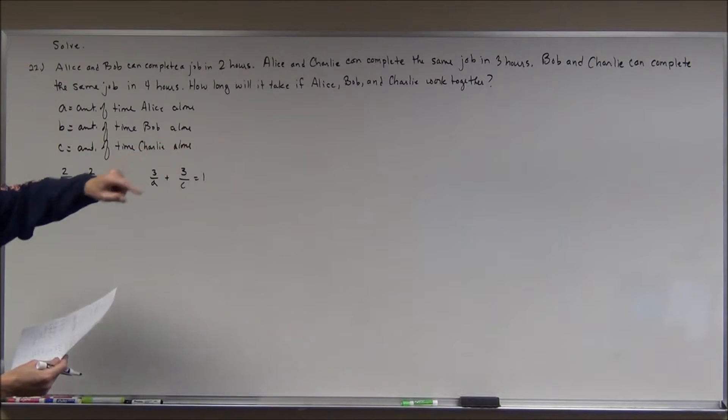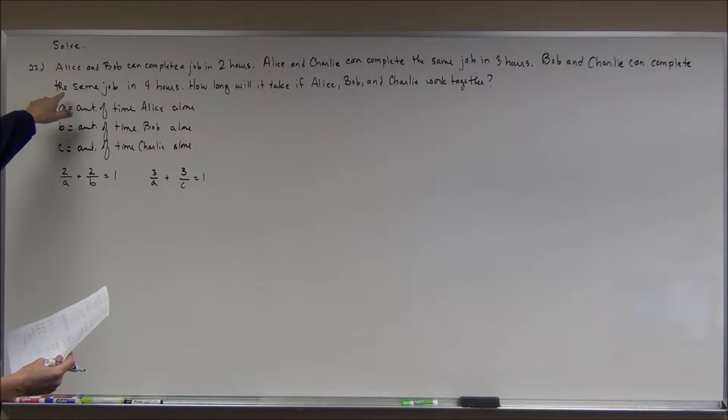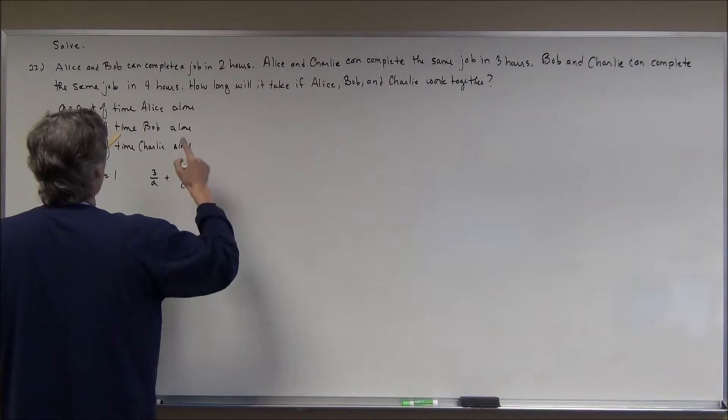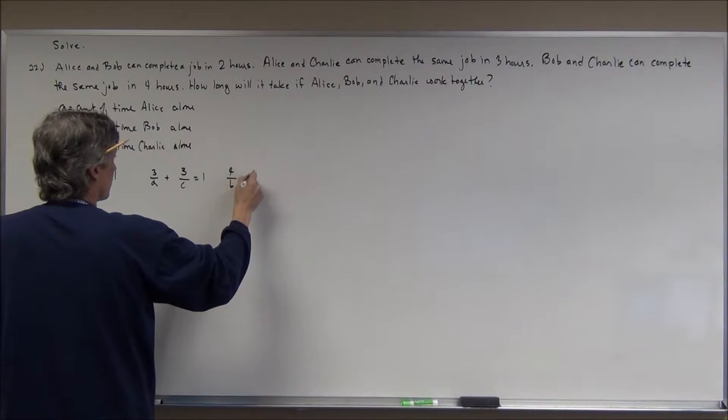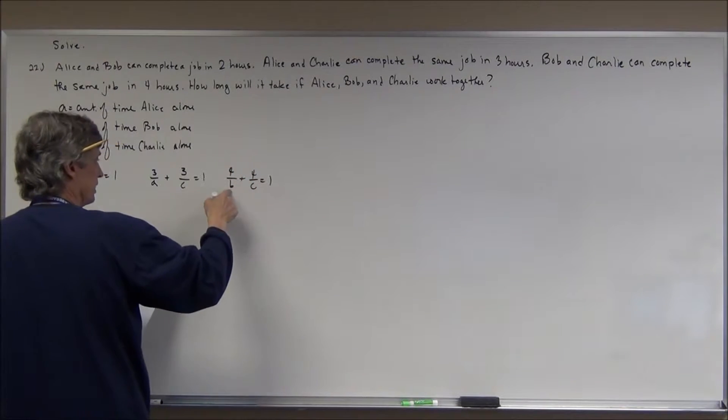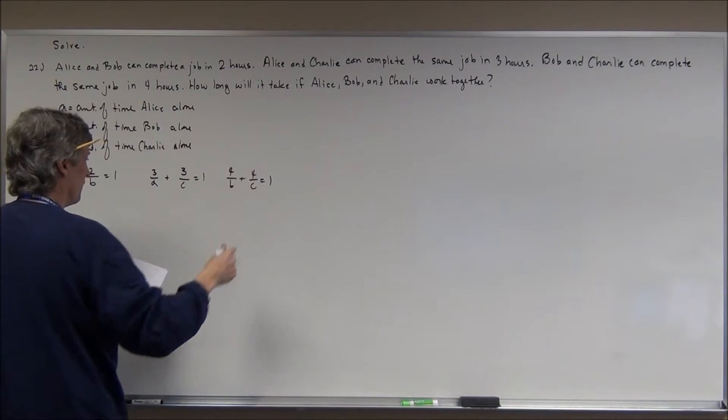Then, this sentence here says Bob and Charlie can complete the same job in four hours. So, very similarly, Bob and Charlie, B and C here. So, that's going to be 4 over B plus 4 over C is equal to 1. That's the fraction of the job Bob gets. Fraction of the job Charlie gets working together, they get one job done.